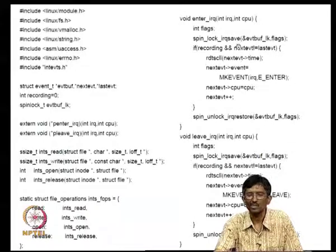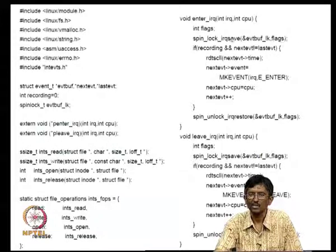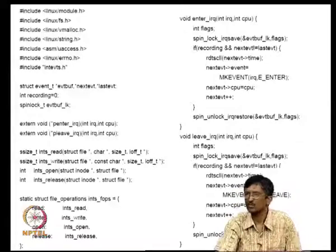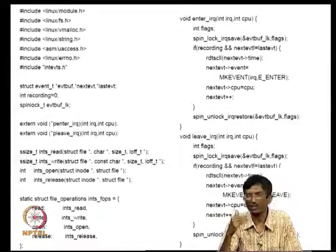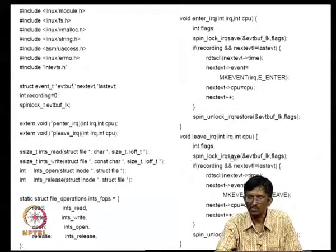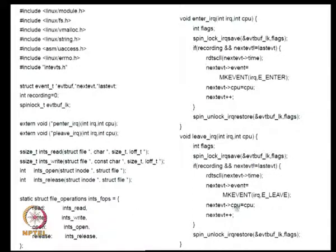We use IRQ_save because we do not know the current interrupt state — there can be stacking of interrupts. The leave handler is similar: we acquire the lock, record the event as a leaving event, increment to the next buffer location, also recording which CPU it was, then exit.